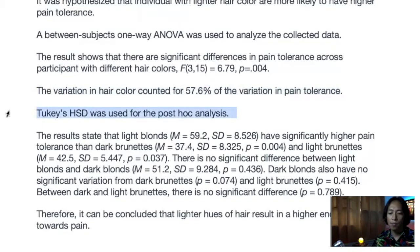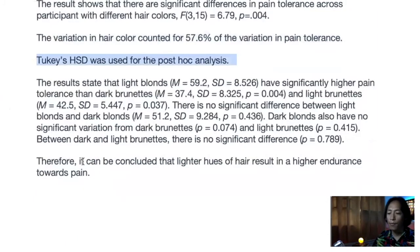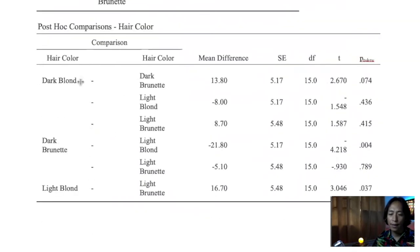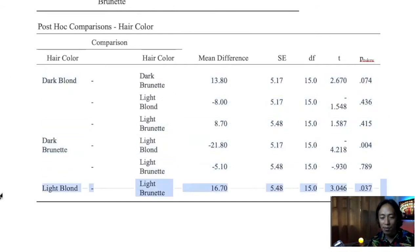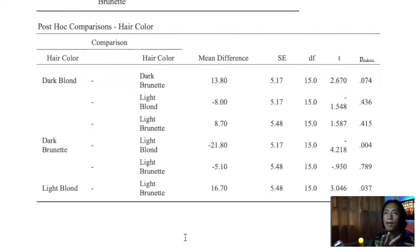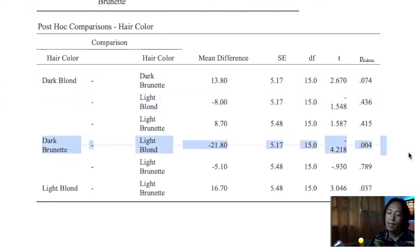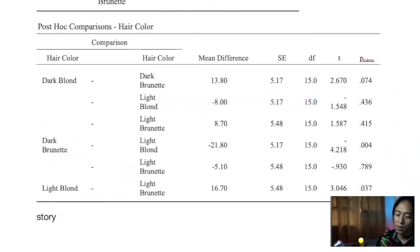Tukey's HSD was used for the post hoc analysis. Writing post hoc results is tricky because there are six comparisons. Rather than writing one sentence per comparison, find ways to simplify the overall picture — look for a story or pattern across the comparisons. Don't go comparison by comparison; instead, take a step back and identify the overarching finding.